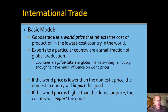Exports to a particular country in our model are a very small fraction of global production. So relative to the United States, relative to the world consumption of textiles, the United States makes up a relatively small fraction of the export market. In this scenario, countries are price takers in global markets — they're not big enough to have much influence on world prices. There's a going rate that goods trade at in the world, and countries, by buying and selling more or less of the good, don't influence the global price very much.